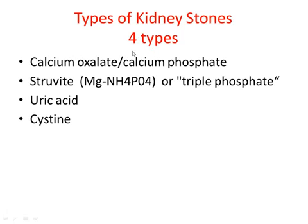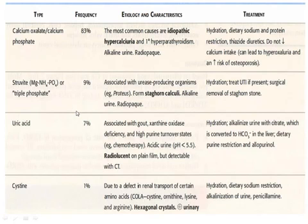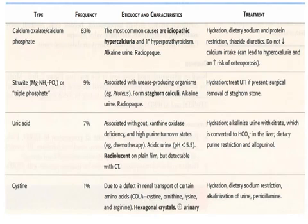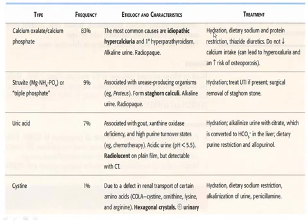Types of kidney stones. There are four types: calcium oxalate, calcium phosphate, struvite, uric acid, and cystine. Calcium oxalate and calcium phosphate together account for 83% frequency. The most common causes are idiopathic hypercalciuria and primary hyperparathyroidism, producing alkaline urine. Treatment includes hydration, dietary sodium and protein restriction, and thiazide diuretics. Do not decrease calcium intake, as it can lead to hyperoxaluria and increase risk of osteoporosis in females.